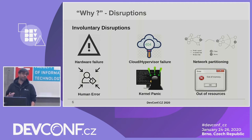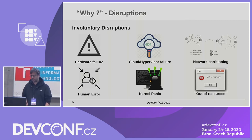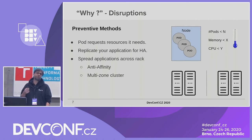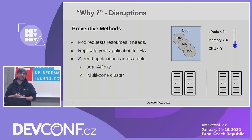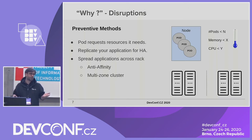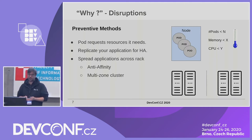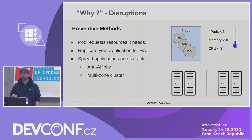Another thing is a node going out of resources. Kubernetes has a mechanism to handle that. Some preventive methods can be defining for a pod what resources it actually needs, so our node won't go out of resources. Using high availability, we can replicate our applications across the Kubernetes nodes. Going even further, you can spread the application and make it even more highly available using anti-affinity and multi-zone clusters.